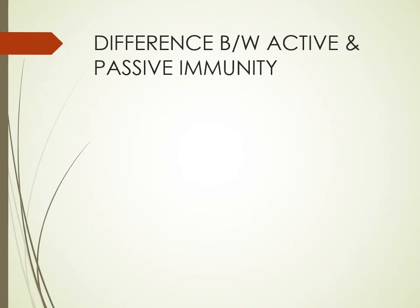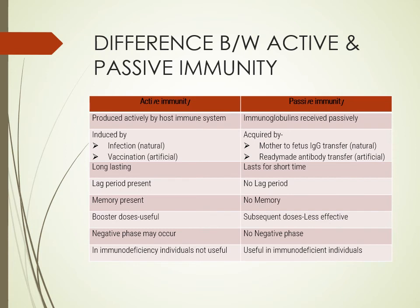The difference between active and passive immunity: in active immunity, your immune system plays an active role; in passive, you receive antibodies passively. Active immunity is induced by infection or vaccination; passive comes from mother to fetus or ready-made antibody transfer. Active immunity is long-lasting because the body forms it itself; passive immunity lasts only a short time. A lag period is present in active immunity; no lag period in passive. Memory is present in active immunity but not in passive. Booster doses are needed in active immunity; subsequent doses are less effective in passive.